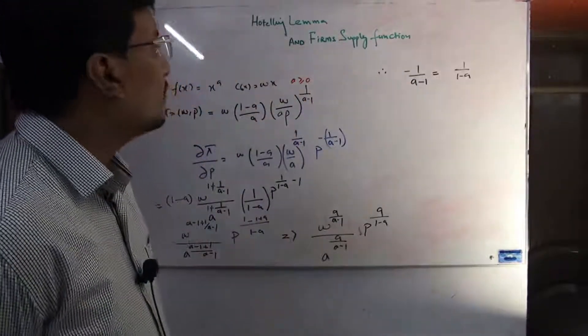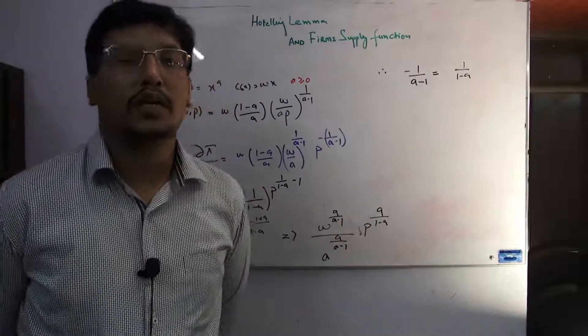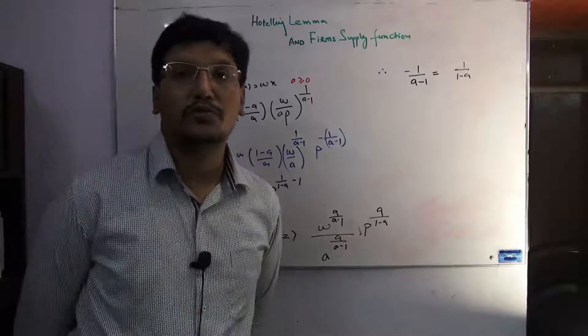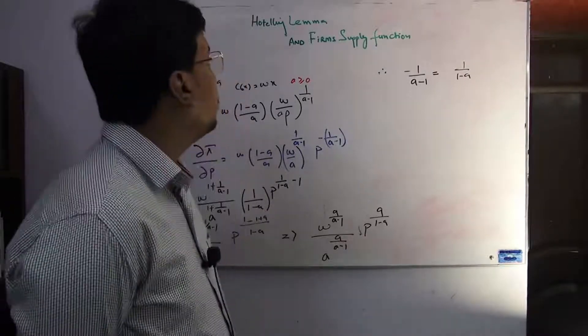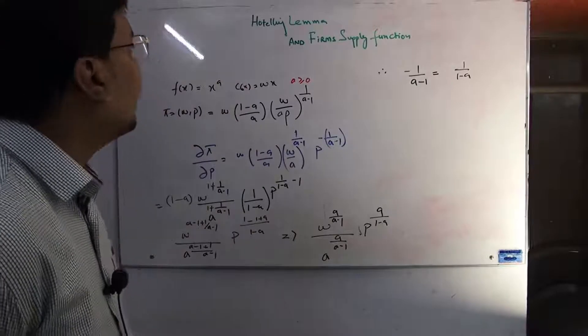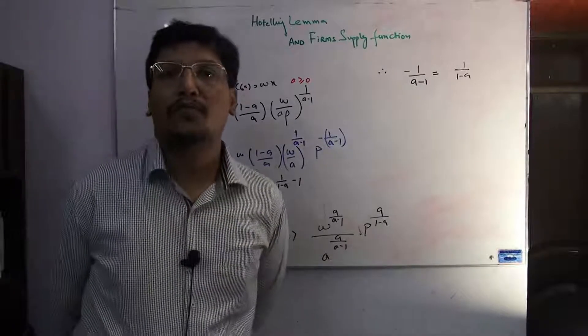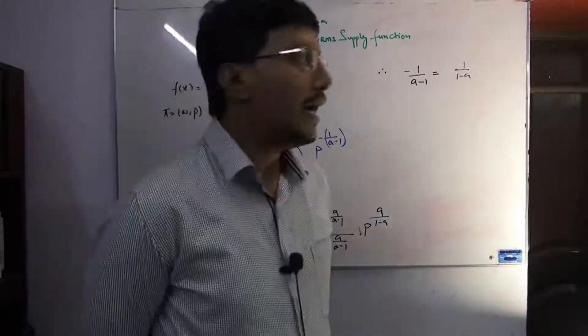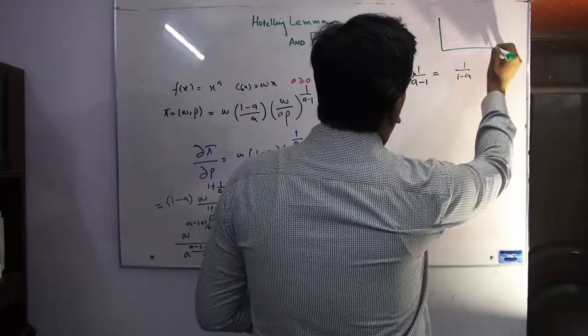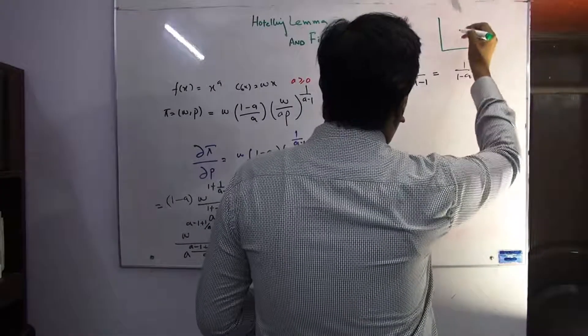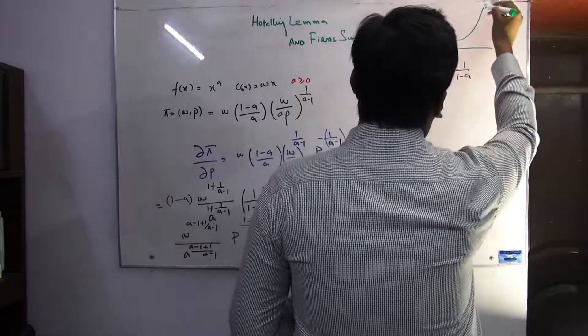We discussed in our lecture the properties of the profit function. It is basically the fifth property - Hotelling's lemma. What is the output? It is very crucial for the production manager and students studying production theory. Basically, the Hotelling lemma approach gives the firm supply function.